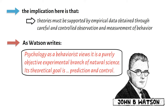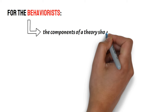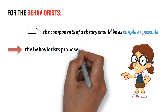For the behaviorists, therefore, the components of a theory should be as simple as possible. Hence, the behaviorists propose the use of operational definitions, which defines variables in terms of observable and measurable events.